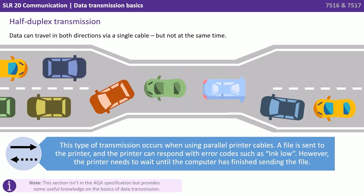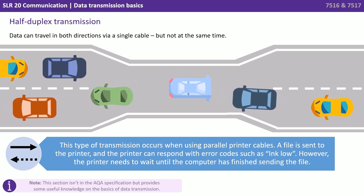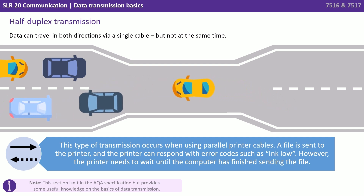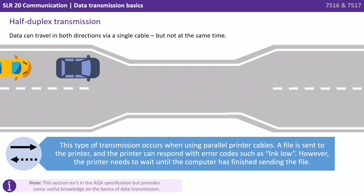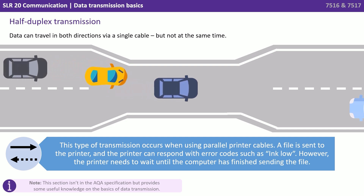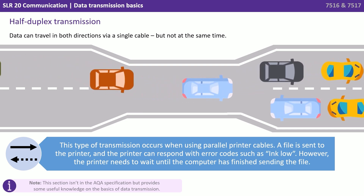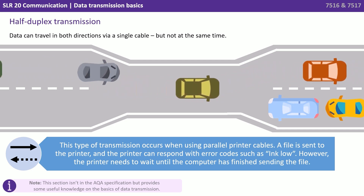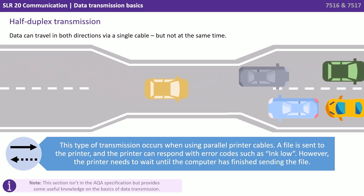Next we have half duplex. Data can travel in both directions via a single cable but not at the same time. This type of transmission occurs when using parallel printer cables. A file is sent to the printer and the printer can respond with an error code such as ink low. However, the printer needs to wait until the computer has finished sending the file.